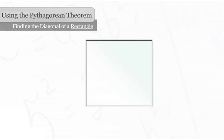We can also find the length of a diagonal of a square. Similar to our example of a rectangle, the diagonal divides the square into two congruent right triangles.